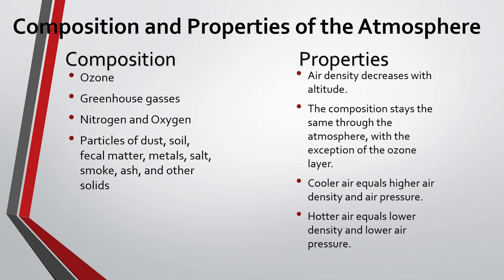Which brings us to properties. Air density decreases with altitude, and that's because there's less gravity to hold it there. Gravity is more in effect closer to ground level, and this actually causes the gas to be weighed down upon the levels above it. Cooler air equals higher air density and air pressure, while hotter air equals lower density and lower air pressure. This is because cooler air is less energetic, so it's not going to move much, while hotter air moves more.